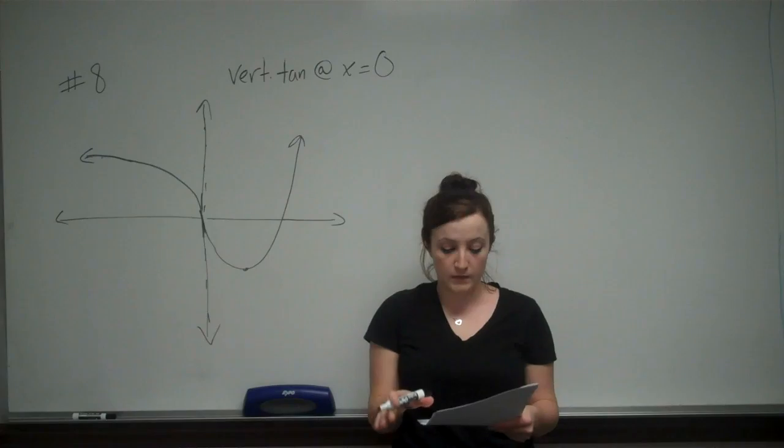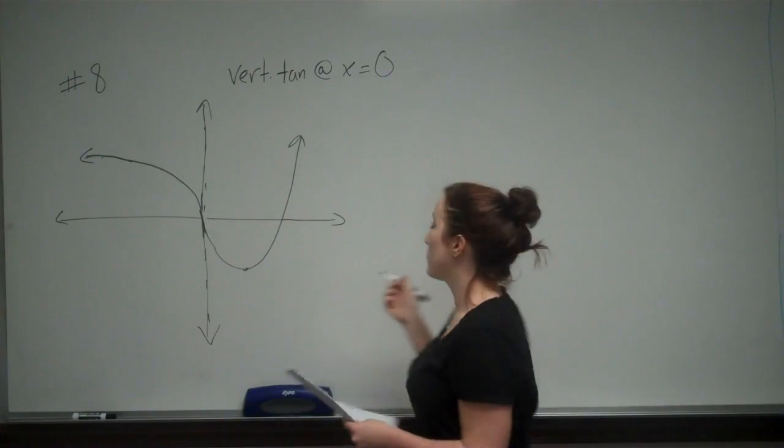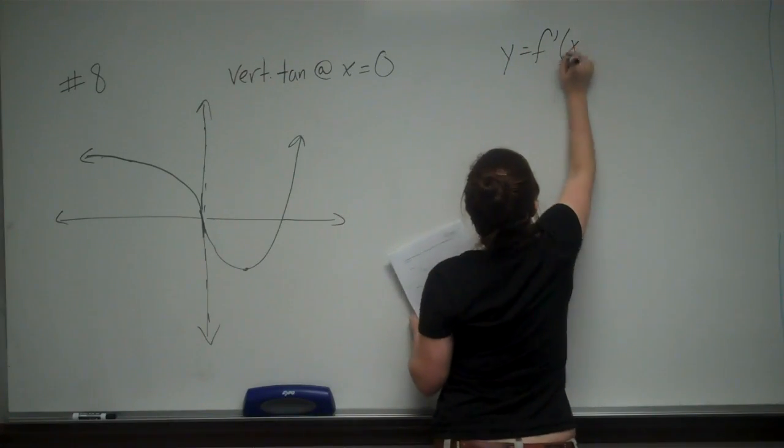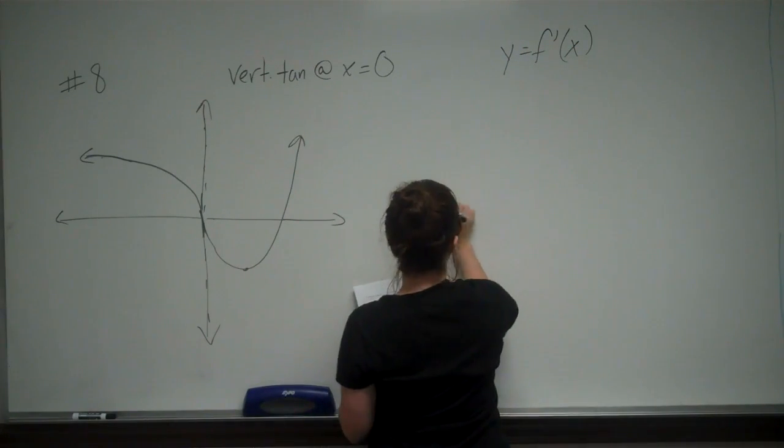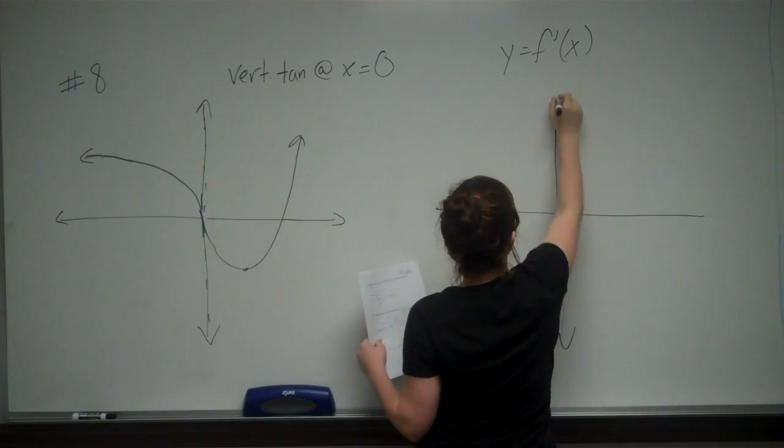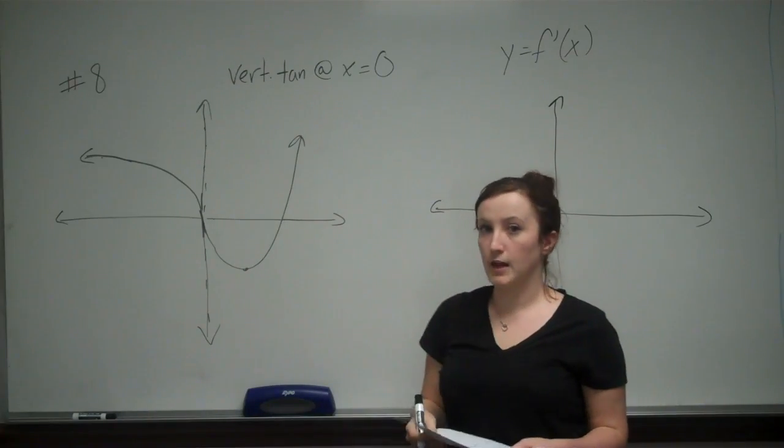It gives us a bunch of graphs, but it says which of the following graphs is a possible graph of y equals f prime of x. So I'm just going to draw a possible graph and then we'll talk about why the other graphs are incorrect.